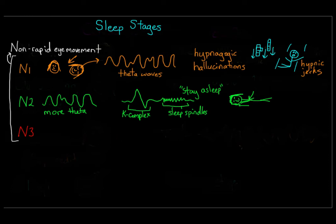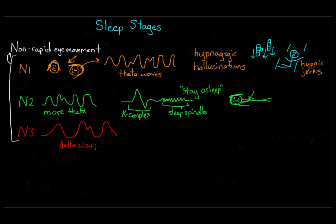Beyond N2, we have N3, our last non-REM stage. N3 is also called slow wave sleep because, as you might guess, brain waves are very slow. These are called delta waves, with a range of about 0.5 to 2 hertz — basically half to two oscillations per second. When you're in N3 sleep, you are very difficult to wake up, and if you walk or talk in your sleep, this is the stage where those things happen.